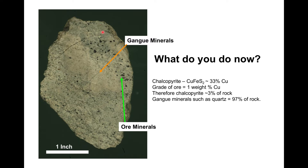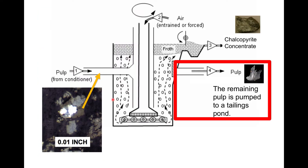We looked at ore-grade rock where the opaque minerals are sulfides such as chalcopyrite. Mining companies mill the ore-grade rock down to about the consistency of baking flour, then use froth flotation to separate the chalcopyrite from all the gangue minerals. In the schematic, the pulp—ore-grade rock plus water plus pine oil—goes in, air is blown in, and the tailings outlet carries all the remaining gangue after separation from chalcopyrite. All of that is stored in tailings ponds on site.